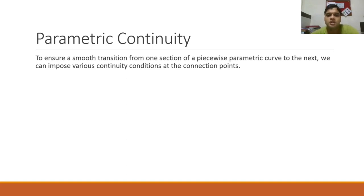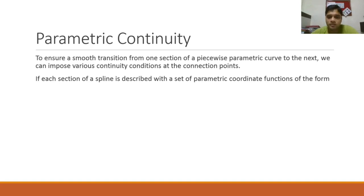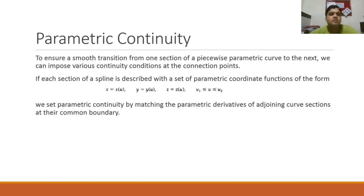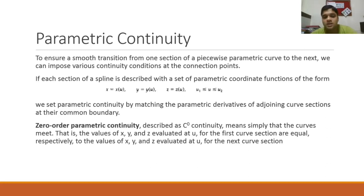To ensure a smooth transition from one section of a piecewise parametric curve to the next, we can impose various continuity conditions at the connection points. This is helpful for composite curves — joining two curves together. If each section of a spline is described with parametric coordinate functions x = x(u), y = y(u), z = z(u), we set parametric continuity by matching the parametric derivatives of adjoining curve sections at their common boundary.